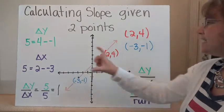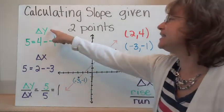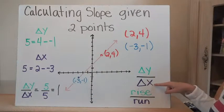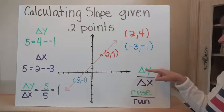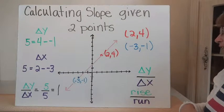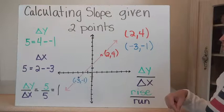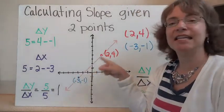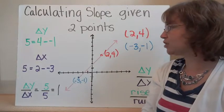So if we take our change in y — that's what delta y means — over our change in x, that's going to give us the slope. This letter is just a Greek letter, delta, and it means 'the change in,' how much we've changed between the two points. Now we can just look at this and figure out how much we've changed in each direction.